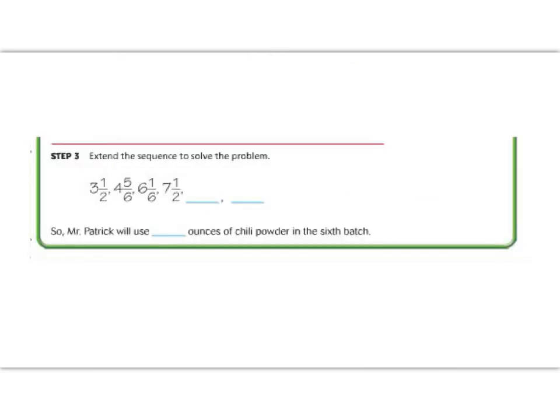Alright, when we left off on the last slide, we had found all the way up to the 4th batch. But we need to find the 6th batch. So we need to use our rule to fill in our next terms in the pattern. So if our rule was that we add 1 2/6, then we need to go from our last number, which was 7 1/2, and we need to add 1 2/6.